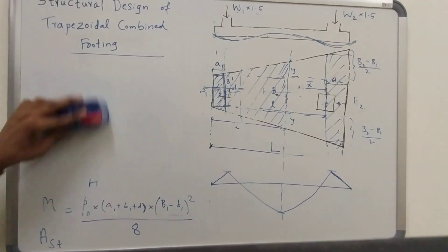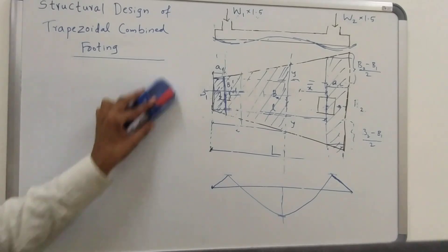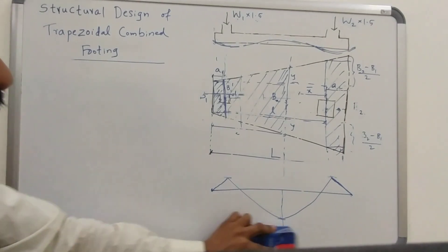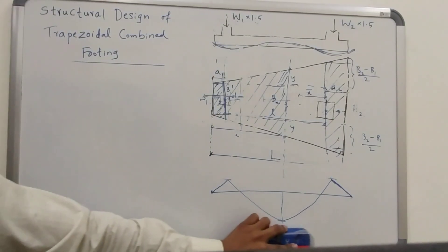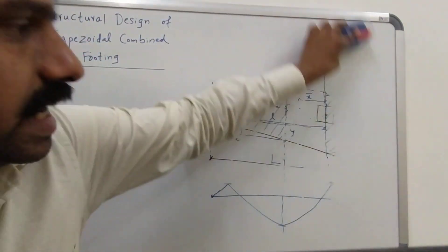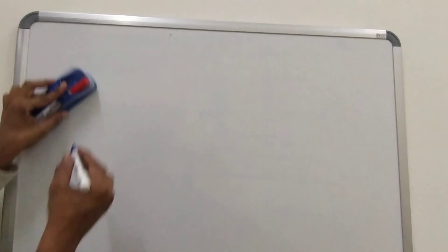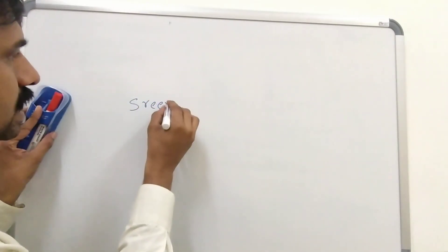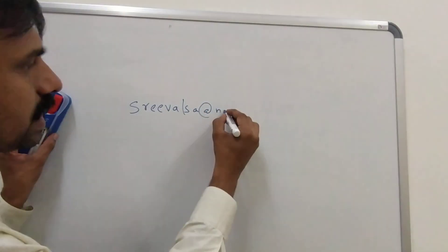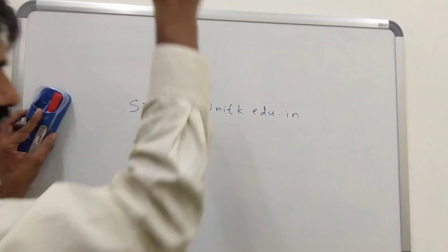I have not gone into the details of AST calculation, one-way shear check, or two-way shear check in depth because they are very similar to rectangular combined footing design — only the differences have been highlighted. I hope you have clearly understood; if you have any doubt, please write to me at my email address. Thank you, all the best.